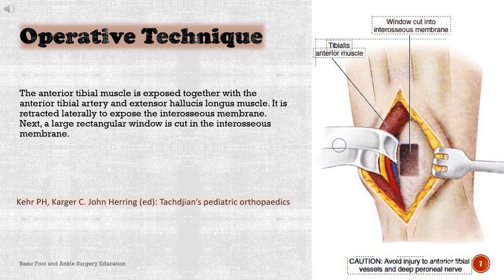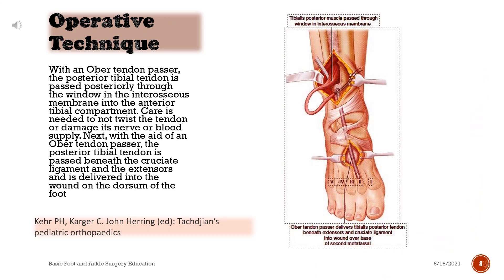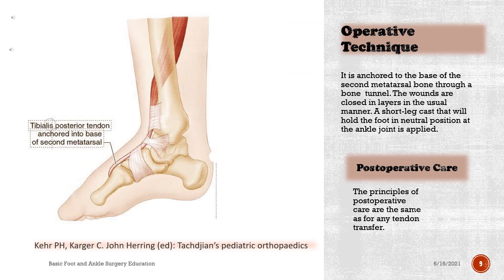A large rectangular window is cut in the interosseous membrane. With an overtendon passer, the posterior tibial tendon is passed posteriorly through the window in the interosseous membrane into the anterior tibial compartment. Care is needed to not twist the tendon or damage its nerve or blood supply. The posterior tibial tendon is then passed beneath the cruciate ligament and the extensors and is delivered into the wound on the dorsum of the foot, where it is anchored to the base of the second metatarsal bone through a bone tunnel.